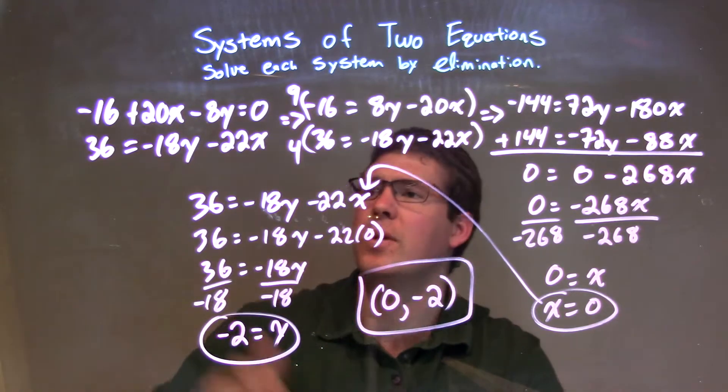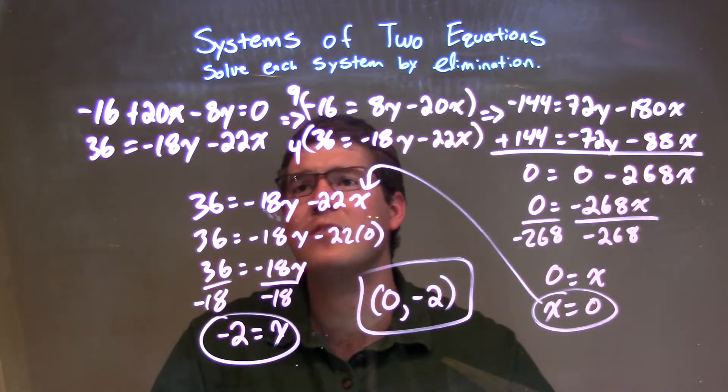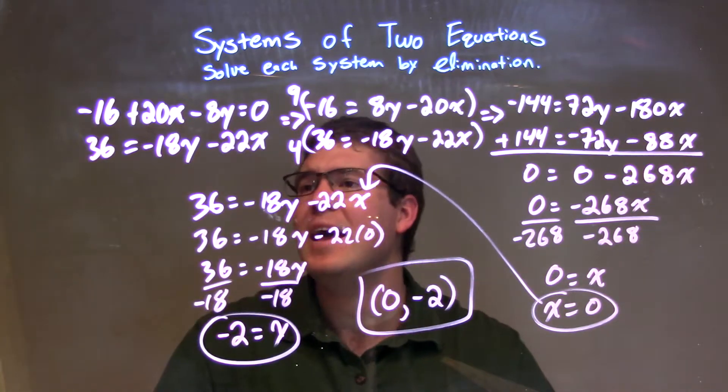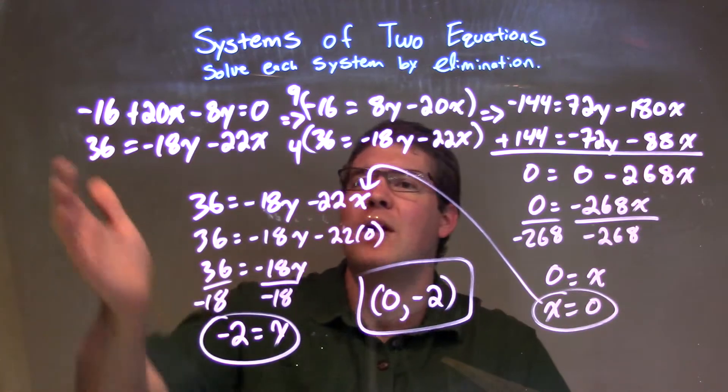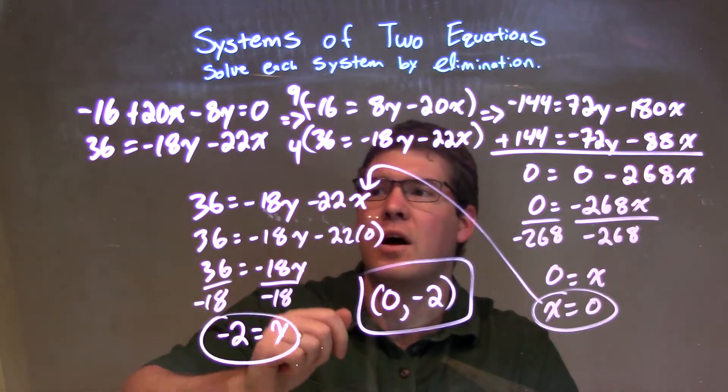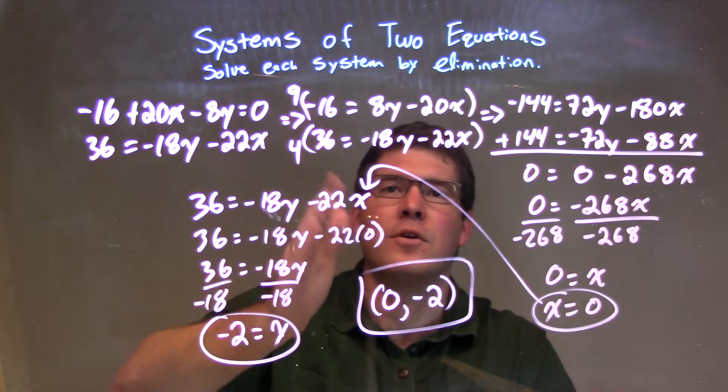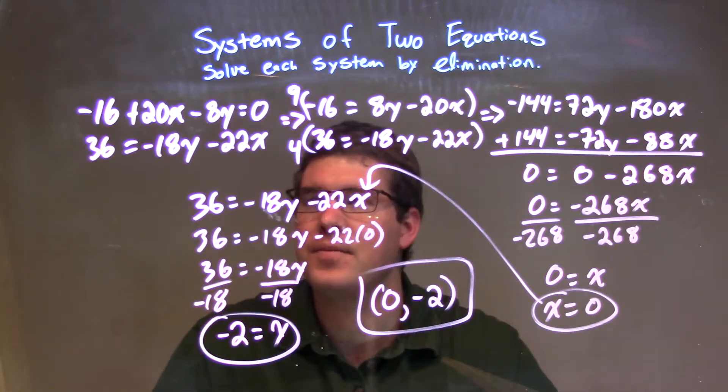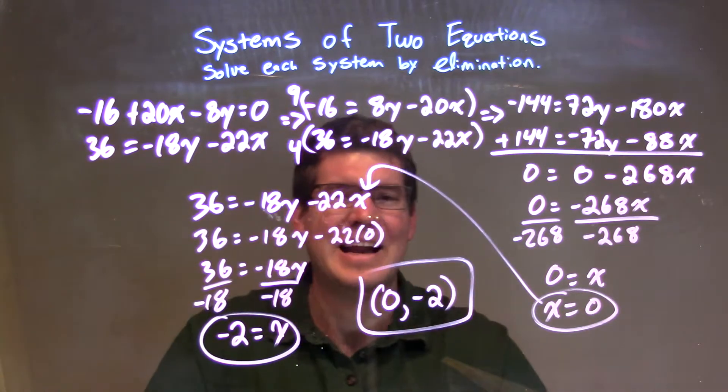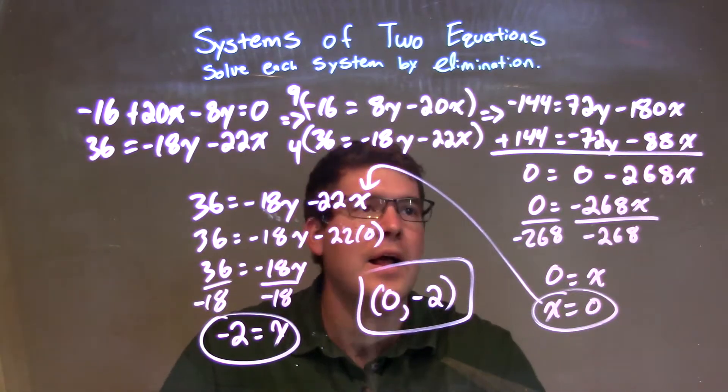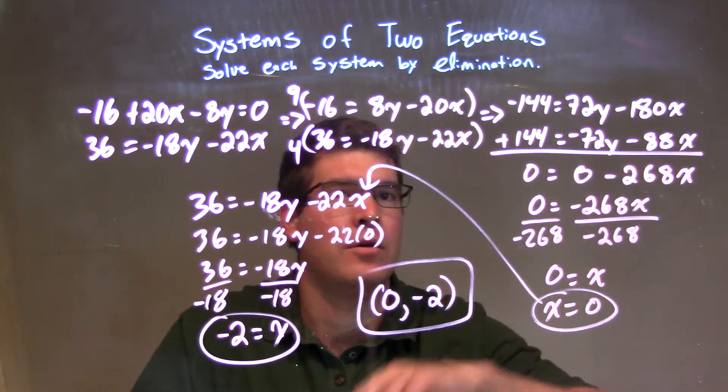So, to recap, we're given our two equations, negative 16 plus 20x minus 8y equals 0, and 36 equals negative 18y minus 22x. I rewrote both equations so the numbers come first, then the variables. From there, I multiplied the top equation by 9 and the bottom equation by 4 to eliminate the y variable.